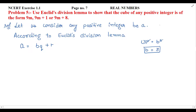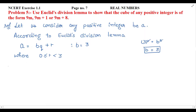The value of b is 3. The remainder condition is that remainder is 0 or greater than 0, but it should be less than 3. That means the possible values of remainder will be 0, 1, and 2.